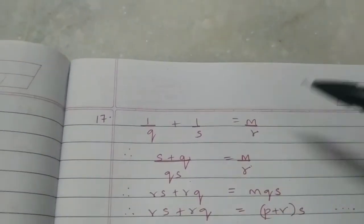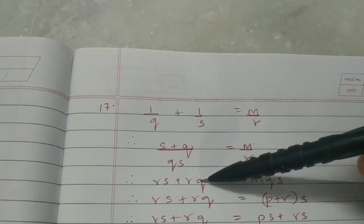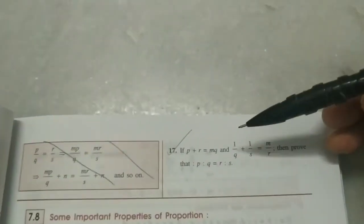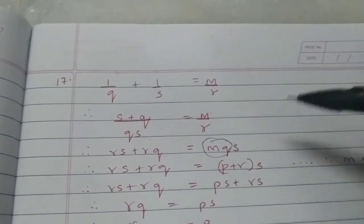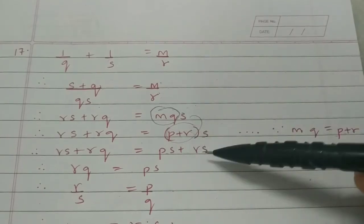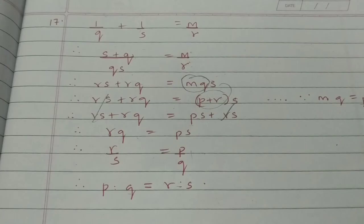Finally the seventeenth sum. Two conditions are given and this has to be proved. Starting with the more complicated condition, we do LCM so that (S+Q) upon QS equals MR. Cross multiplying gives RS + RQ equals MQS. Since the value of MQ is given as (Q+R)(P+R), we substitute that here. After expanding and simplifying, RS cancels and rearranging gives P upon Q is equal to R upon S — hence proved. Hi students, if you found this video useful press the like button. To enroll for my online lectures or online test series, email me or message me on Instagram — check the description for more information.